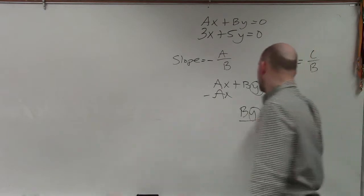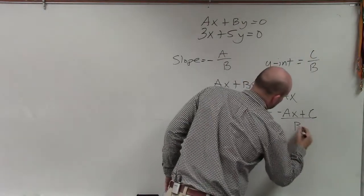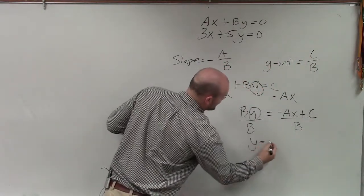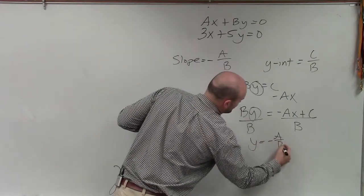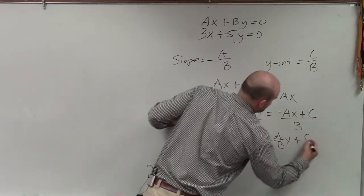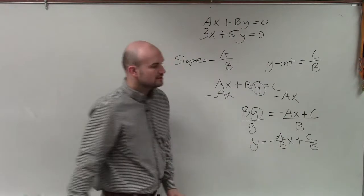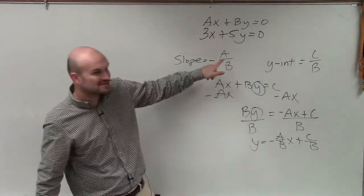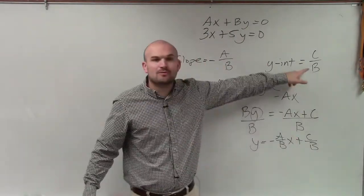Then you have by equals negative ax plus c. Then, to solve for y, you divide by b, divide by b, and you get y equals opposite of a over b, x plus c over b. So that is your slope. That is your y-intercept.